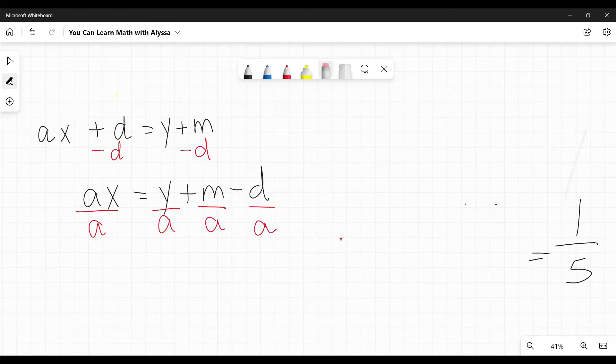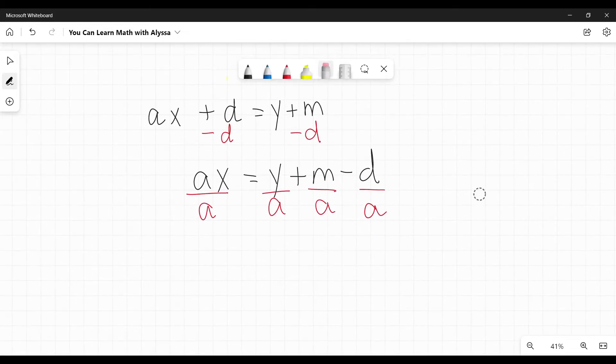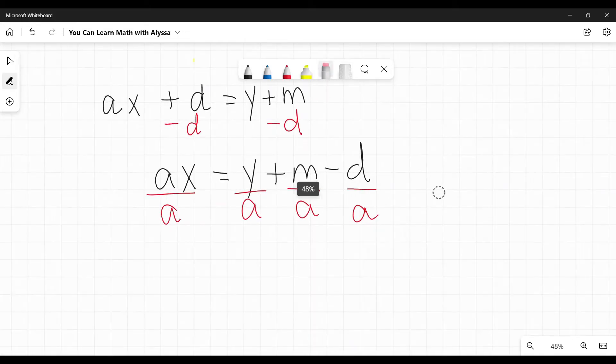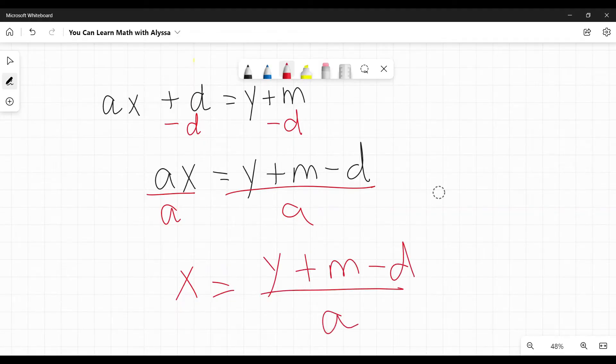But just again, make sure that you are presenting the answer in the way your teacher wants. It is most likely that it's going to be that they want it to be all over a, but just double check. So in this case, x would equal y plus m minus d all over a.